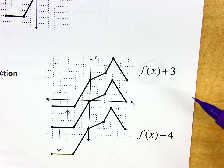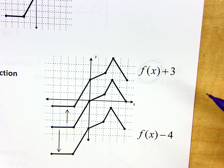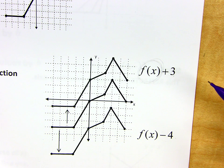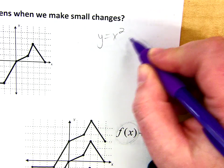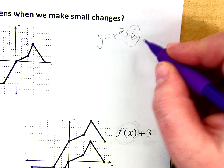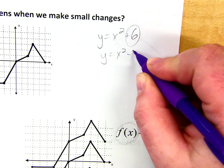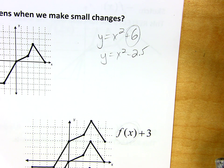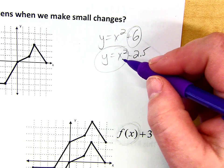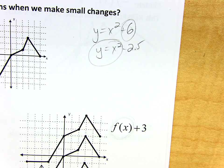So if I could graph the parent function of something and then I added 2 to the end of it, all you'd have to do is take that parent function and move it up 2. If you could graph y equals x squared — which is just a parabola with its vertex on the origin — then you could now graph y equals x squared plus 6 by just taking that parent function and moving it up 6. Or y equals x squared minus 2.5 — just take it and slide it down 2 and a half. You already know how to graph y equals x squared, and if there's a plus or minus number on the end, that's just a vertical shift, up or down.